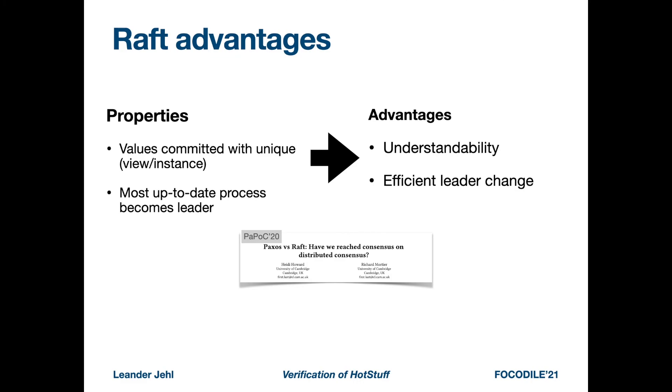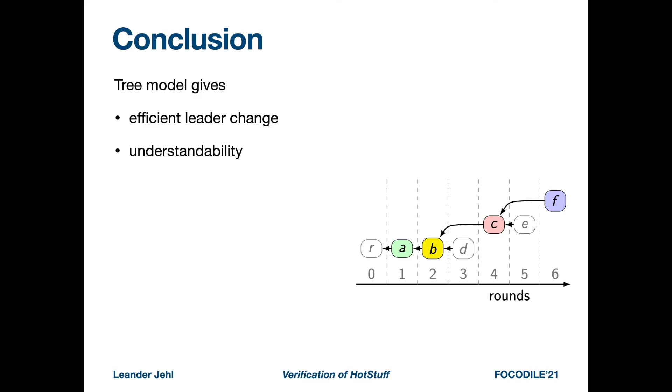In a recent work, Heidi Howard has identified the main differentiating properties and advantages of Raft over Paxos. The main properties are that values are committed with a unique view instance tuple and that in Raft the most up-to-date process becomes the leader. These properties give the advantages of better understandability and efficient leader change. Interestingly, these properties are exactly the properties that make Raft suitable for the tree model. Remember also that efficient leader change was also one of the selling points for HotStuff.